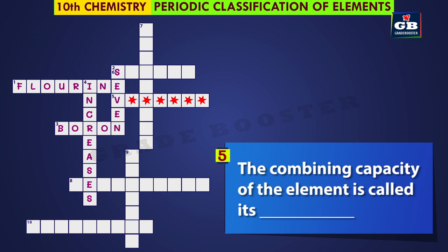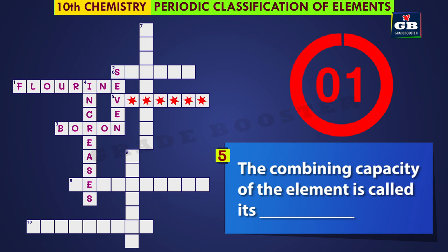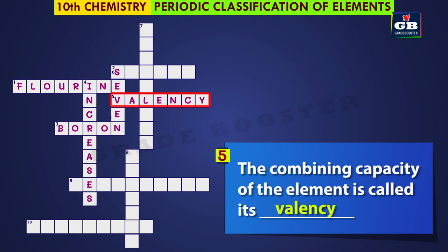Five: the combining capacity of the element is called its dash. The answer is valency. The combining capacity of the element is called its valency.